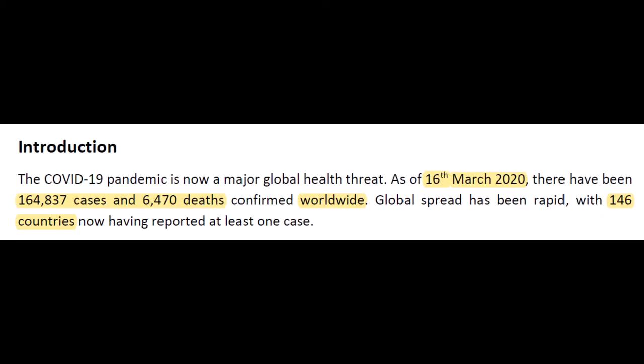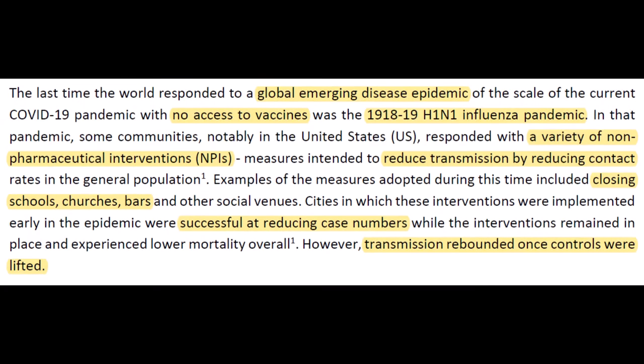They open this paper with some interesting statistics. As of March 16th, there were 164,837 cases and 6,470 deaths across 146 countries. Remember, confirmed cases will always be a smaller number than actual cases because to be confirmed you need to be tested, and test kits are rather limited. They say this is comparable to the H1N1 outbreak of 1918, and that reducing contact among people by closing gathering places — among other non-pharmaceutical interventions, from now on referred to as NPIs — was effective and should continue to be effective in situations like right now.